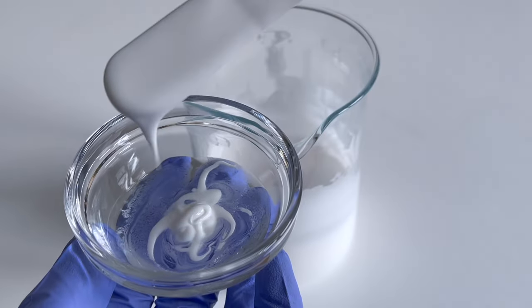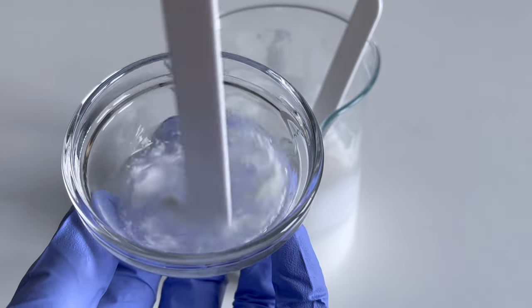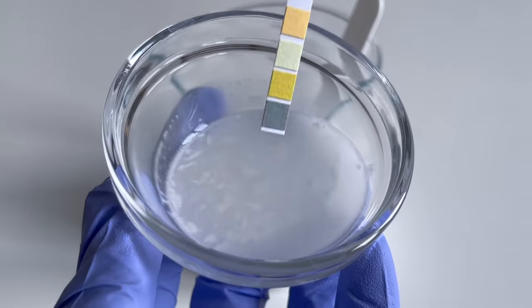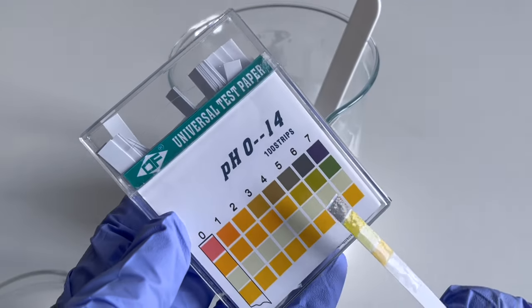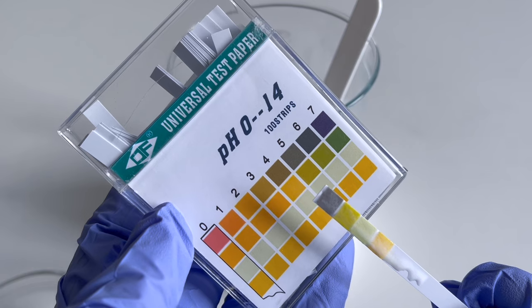After mixing in the citric acid, I test the pH value again. The pH value is now around 5 and 5.5, which is perfect.